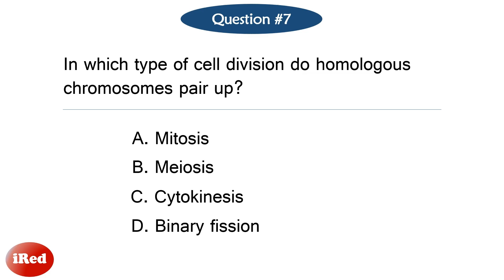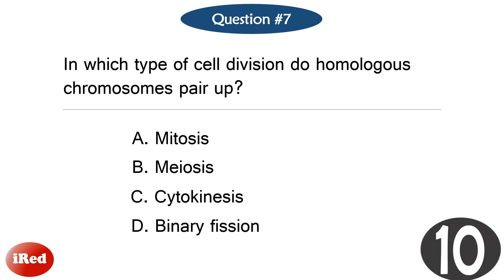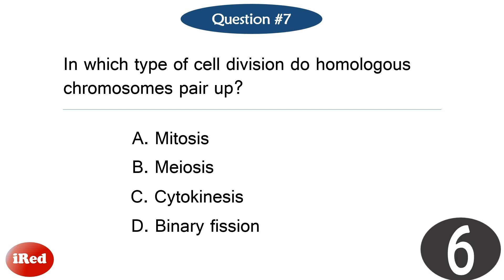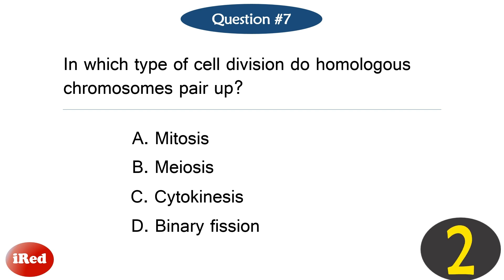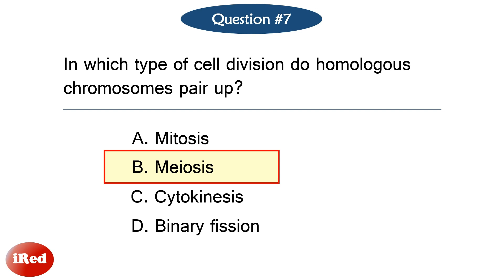Question number seven. In which type of cell division do homologous chromosomes pair up? The correct answer is letter B: meiosis.